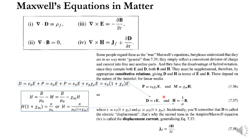For linear media, the polarization vector P equals epsilon 0 chi_e times E, where chi_e is the electric susceptibility. For nonlinear media there are higher-order terms like E squared, E cubed. Similarly, for the magnetic field, the magnetization vector M equals magnetic susceptibility chi_m times H.